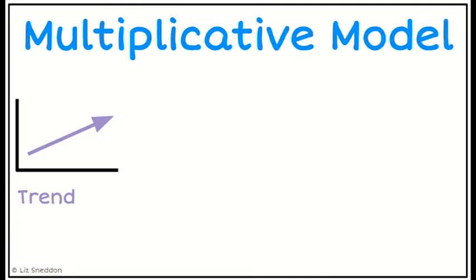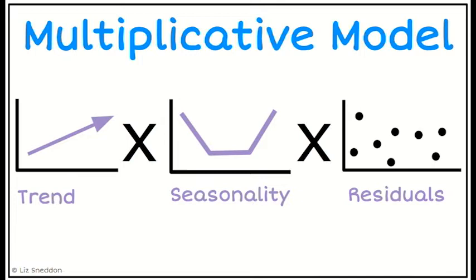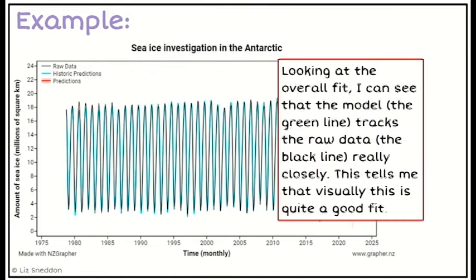If we have a fan or funnel effect — so the variation is not constant — then we want to use the multiplicative model, which says trend times seasonality times the residual. So the key difference is knowing which model is best to use when; the default is the additive model.